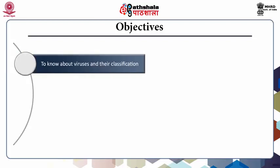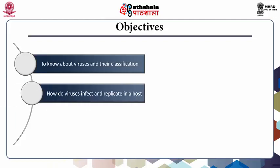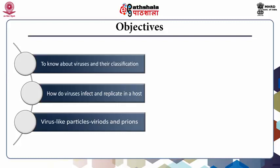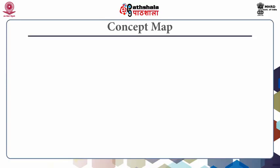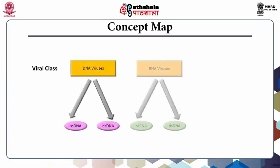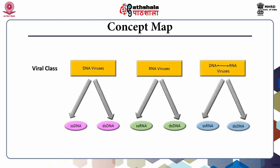This lecture will cover what viruses are and their classifications, how they infect and replicate in a host, and then we will discuss virus-like particles, viroids, and prions. The concept map for this lecture covers DNA viruses, RNA viruses, and DNA-RNA viruses. Under DNA viruses we will cover single-stranded DNA virus and double-stranded DNA virus, and under RNA viruses, single-stranded and double-stranded RNA virus.